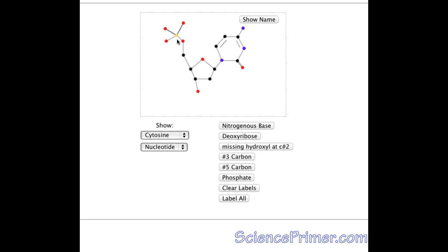At the center of a nucleotide is a deoxyribose sugar. The deoxyribose sugar contains five carbons. A nitrogen-containing base is attached to carbon number one, and a phosphate group is attached to carbon number five.